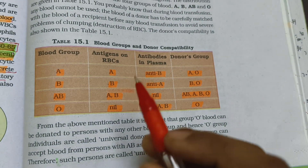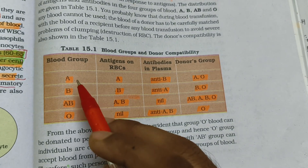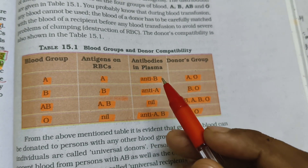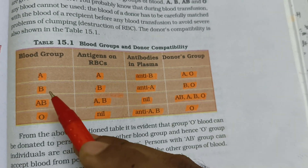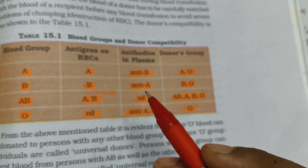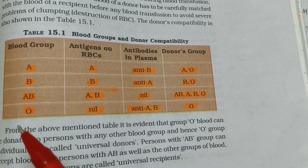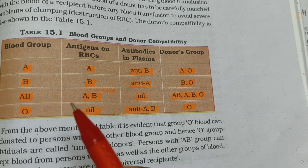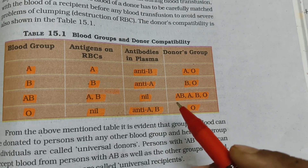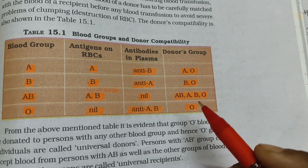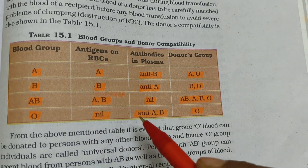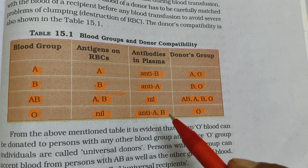In ABO blood grouping: Blood group A has antigen A on RBCs and antibody B in plasma; donors are A and O. Blood group B has antigen B on RBCs and antibody A in plasma; donors are B and O. Blood group AB has both antigens A and B on RBCs with no antibodies in plasma; donors can be A, B, AB, or O. Blood group O has no antigens on RBCs but has both antibodies A and B in plasma; donors are O only.